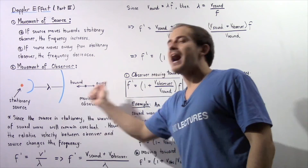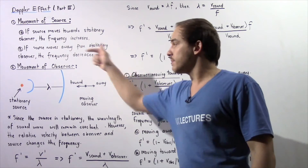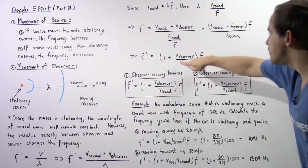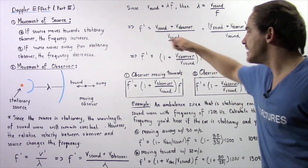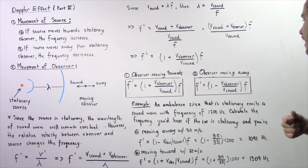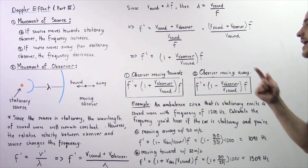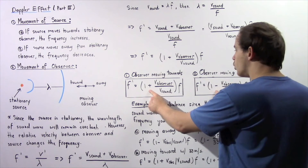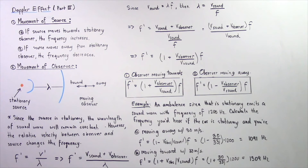If the observer moves away from the sound waves and the sound source, the velocity becomes negative, giving the equation: f' equals f times (1 minus v_observer divided by v_sound). So one equation uses a positive sign for motion toward the source, and the other uses a negative sign for motion away from the source.